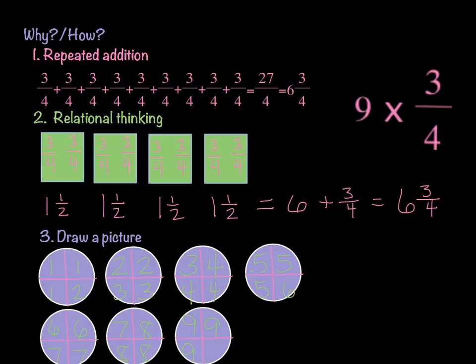This is similar to something that we've done in class not so long ago. I am taking the fraction 3 fourths, and I am writing it 9 times, because I'm taking 9 times 3 fourths. And when I do that, I add all of those 3's together across my numerators, and I get 27 fourths.